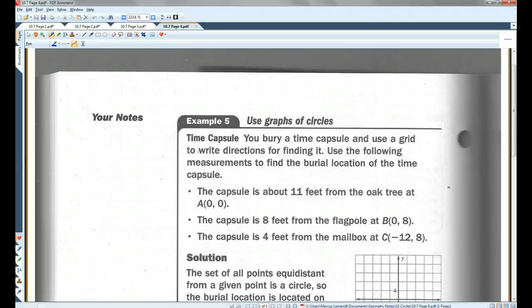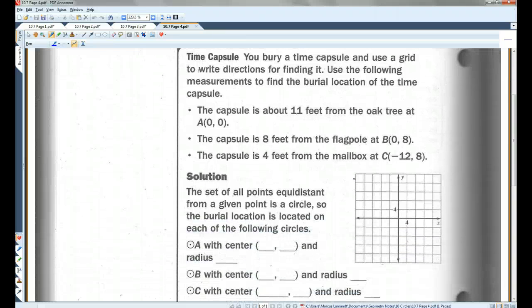Okay, time capsule. You bury a time capsule and use a grid to write directions for finding it. Use the following measurements to find the burial location of the time capsule. The capsule is about 11 feet from the oak tree at A(0,0). So here is A(0,0), it's 11 feet from the oak tree, so somewhere 11 feet away is the time capsule. The capsule is 8 feet from the flagpole at B(0,8). So each of these lines are 4, so (0,8) would be here.